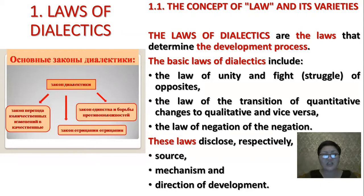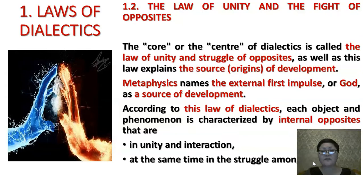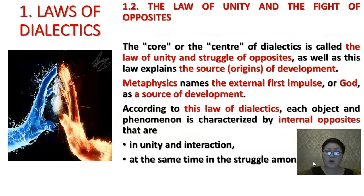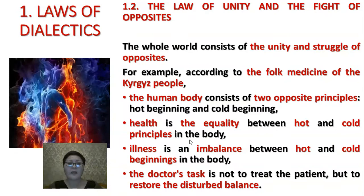The second topic is the law of opposites. The core or center of dialectics is called the law of unity and struggle of opposites, and this law explains the source or origin of development. Metaphysics names the external first impulse or God as a source of development. According to this law of dialectics, each object and phenomenon is characterized by internal opposites that are in unity and interaction, at the same time in struggle among themselves. The whole world consists of the unity and struggle of opposites.